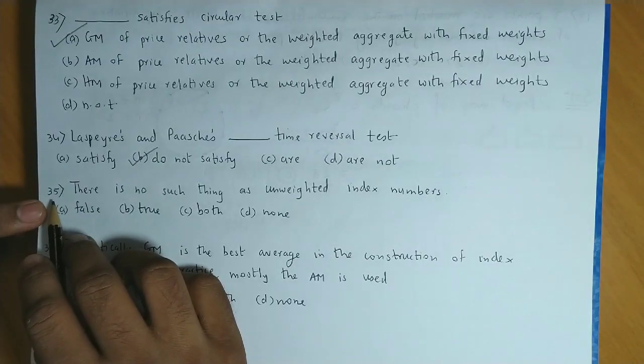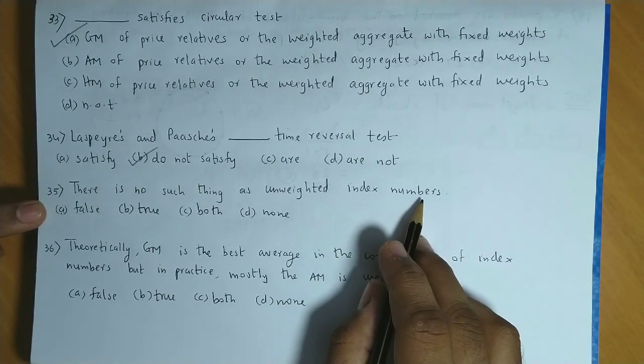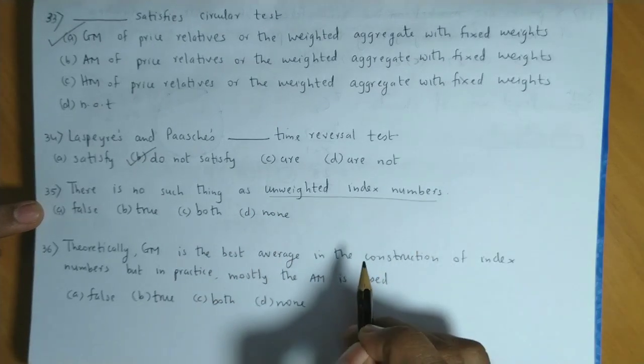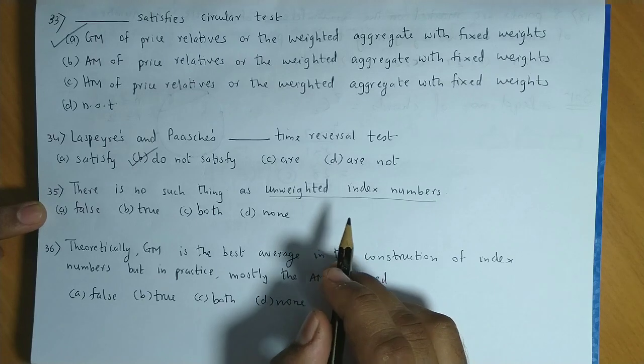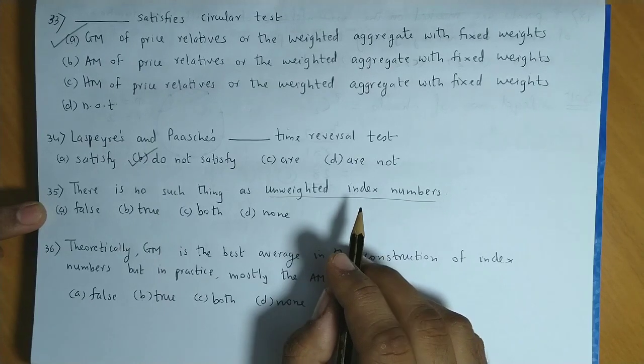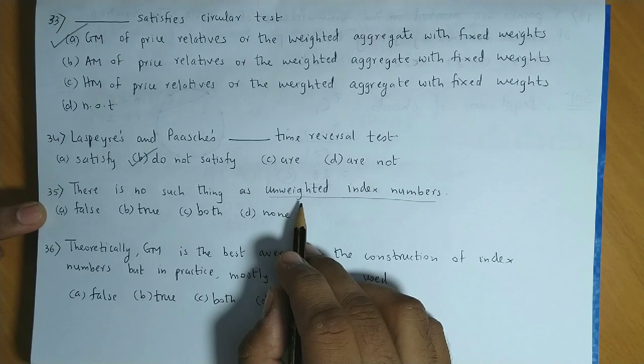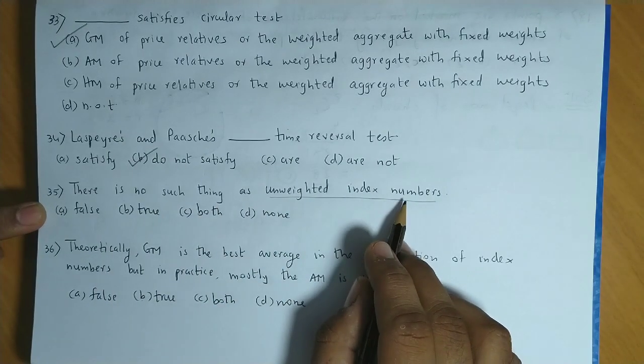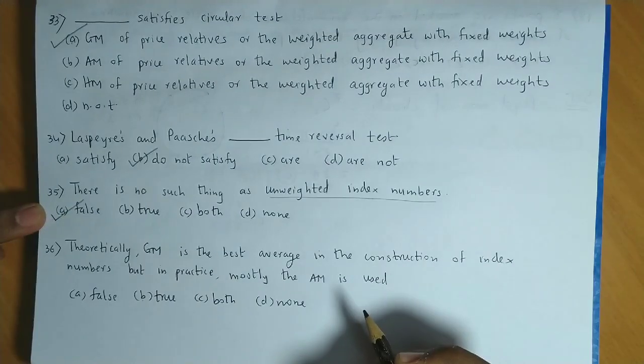Question number 35: There is no such thing as unweighted index numbers. Now this statement is false because unweighted index numbers, yaani ki simple index numbers, we don't do weights. Or say all commodities are given the same weightage. So simple index numbers exist. So basically the statement is false. So the answer for question 35 is option A.